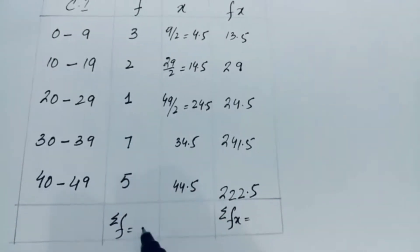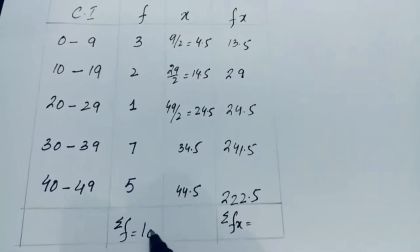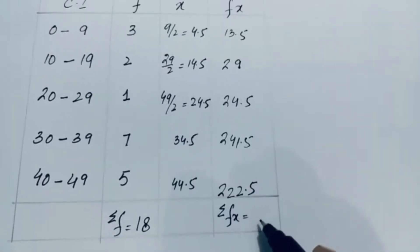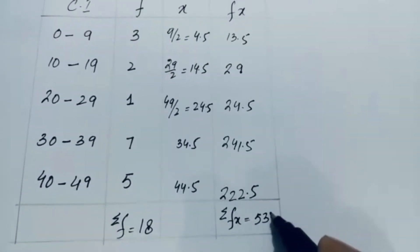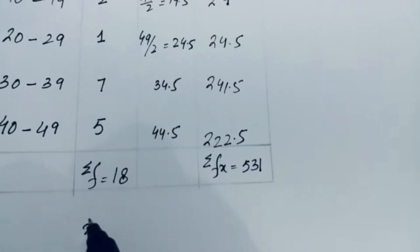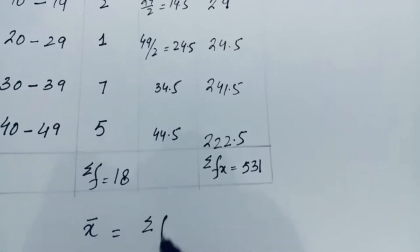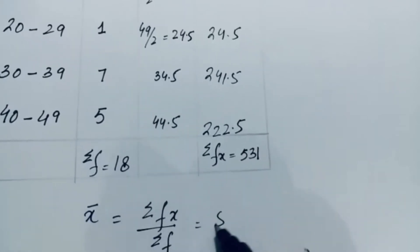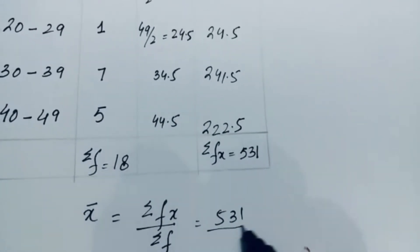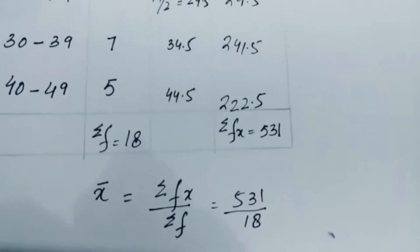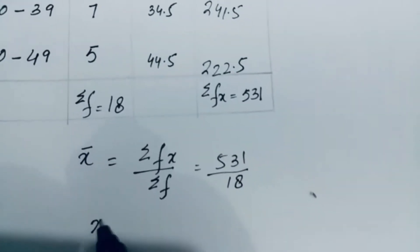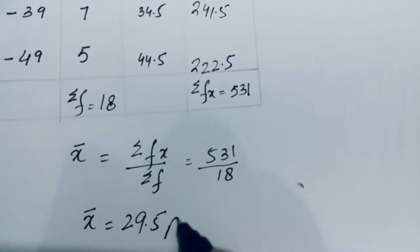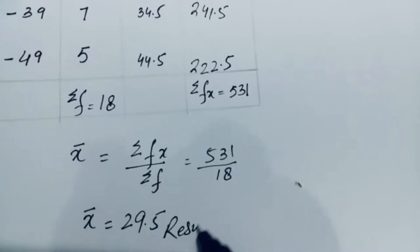The total frequency is 18 and the total fx is 531. According to the formula, x̄ equals summation fx divided by summation f, which means 531 divided by 18. The answer is x̄ equals 29.5.